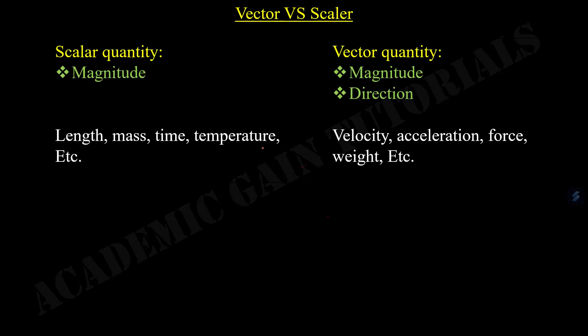Now, to understand better about vector, we have to differentiate between scalar quantity and vector quantity. To represent a scalar quantity, we need one piece of information, that is magnitude. But in vector cases, to represent a vector quantity, we need two pieces of information: one is magnitude and another is direction.